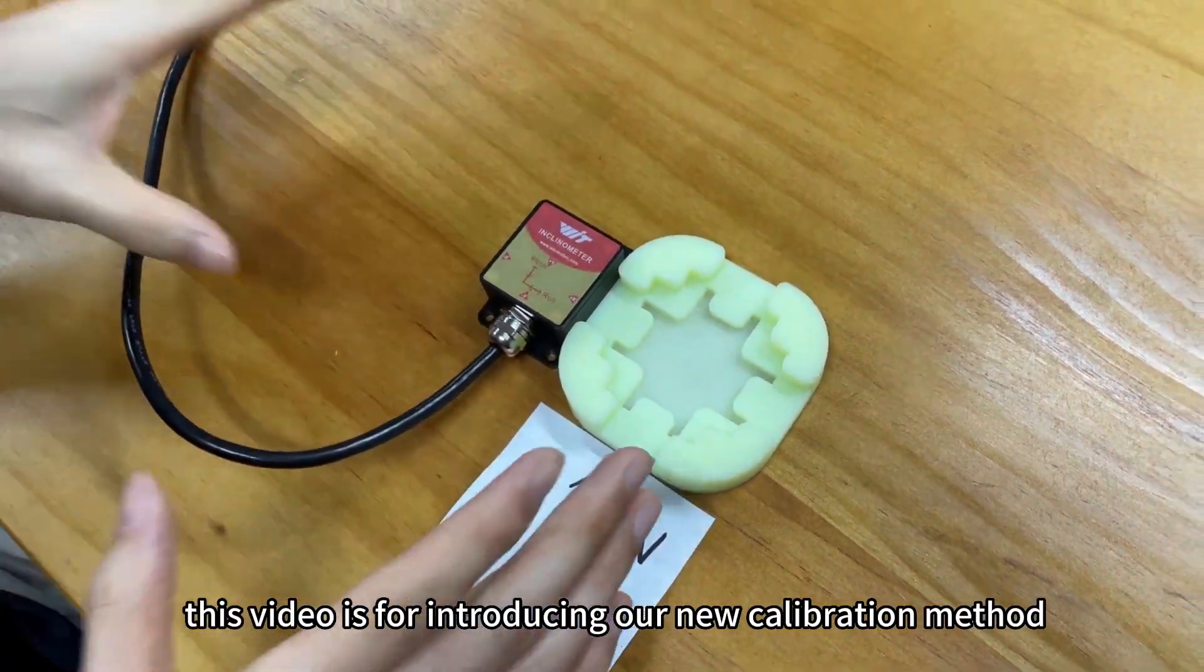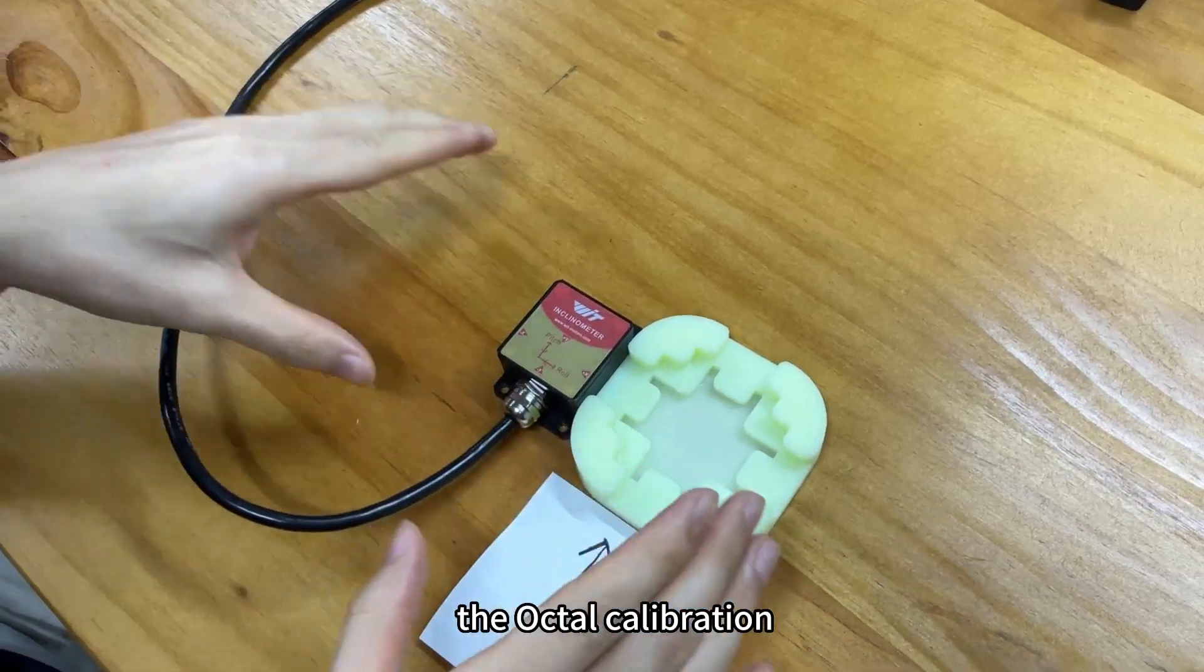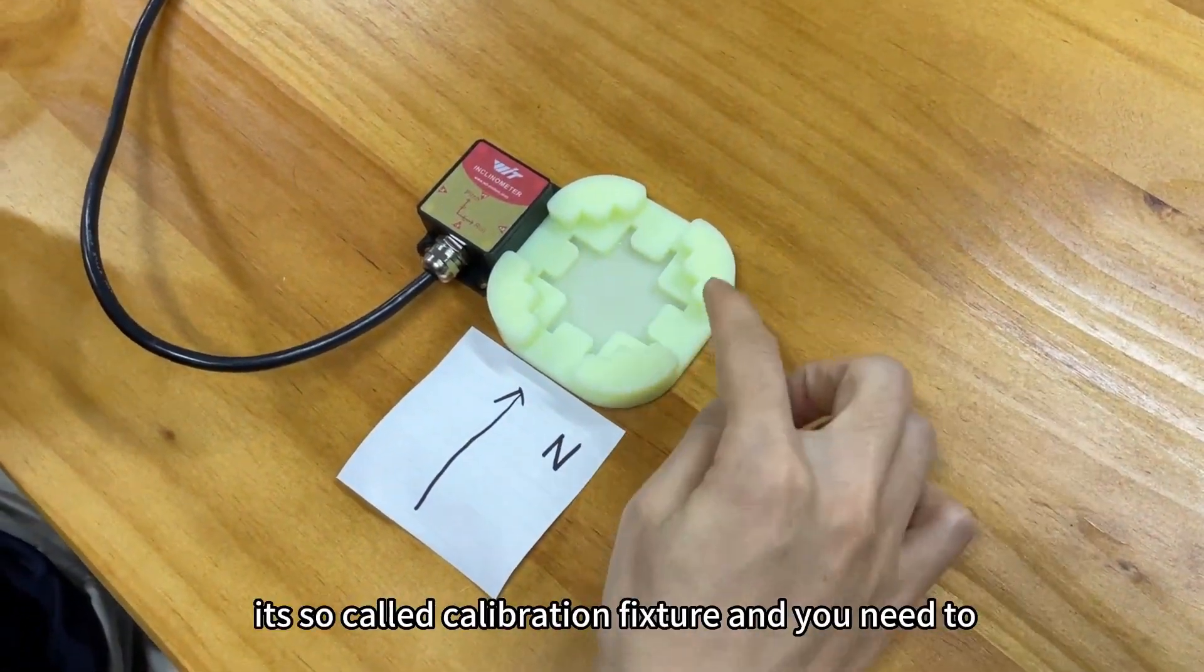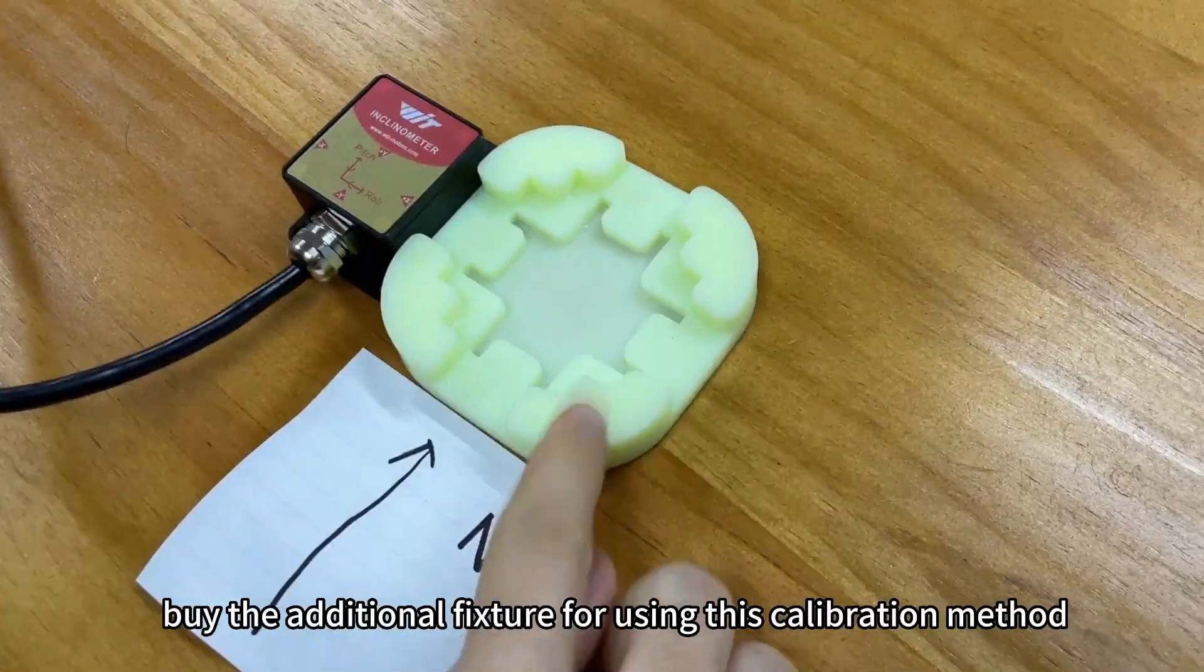Hey guys, this video introduces our new calibration method, the Octo calibration. This method requires a tool called a fixture, and you need to buy the additional fixture for using this calibration method.